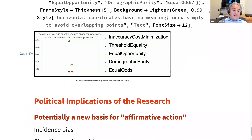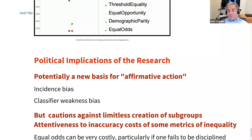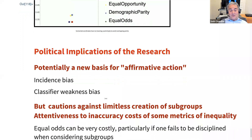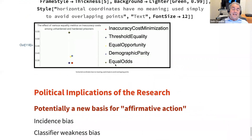What are the political implications? In law, there are various doctrines and theories approved for what the United States calls affirmative action — giving preferences to historically underrepresented groups, most of which have been rejected by the current Supreme Court. This research suggests that incidence bias or classifier weakness might be a legitimate basis for granting some preference to disadvantaged groups. But it also suggests good caution about pursuing certain equality measures, particularly the equal odds measure that Hart and Srebo recommend.